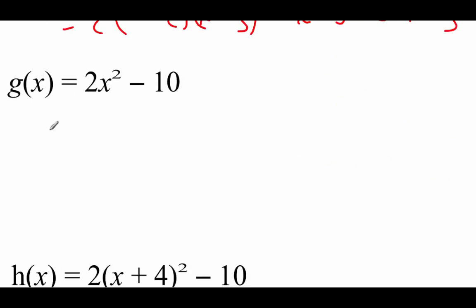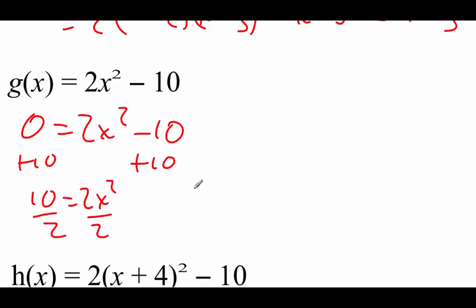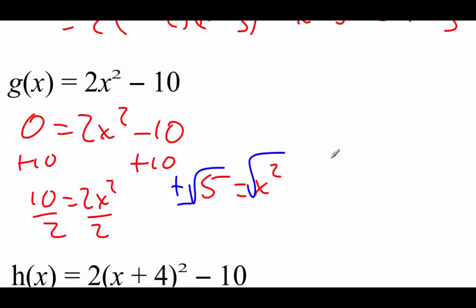On this next one, set it equal to zero. I'm not going to unfoil this one — I'm just going to move numbers around. Add 10 to the left-hand side, so we get 10 equals 2x squared. Divide both sides by 2, so 5 equals x squared. Then square root both sides — remember, when we square root the 5, we have to put a plus or minus in front. So we get x equals plus or minus the square root of 5.